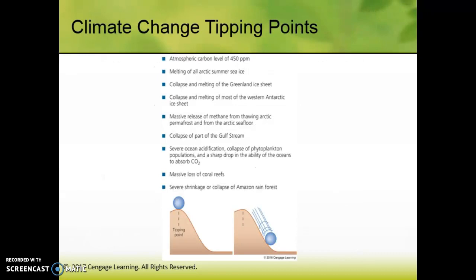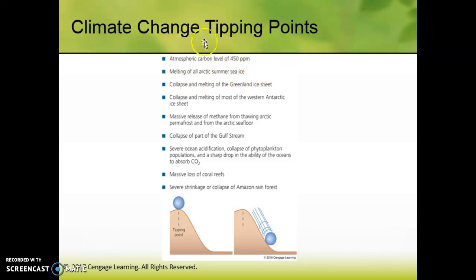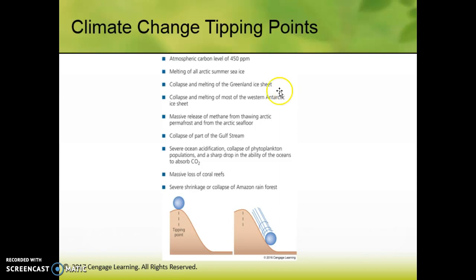There are some tipping points we need to be aware of. 450 parts per million is a really big one — definitely commit that to memory for the AP exam. Melting of all the Arctic summer sea ice is a tipping point. Tipping points are the point of no return. Once these things happen, there's no going back. Once the Greenland ice sheet melts, it's gone. I saw on the news recently that there's only one area of Greenland that still has an ice sheet attached to it in the summertime, which is alarming.